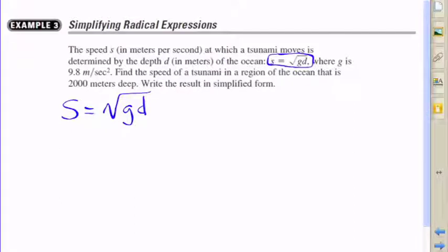So the speed at which the tsunami moves is given by s equals the square root of gd. That's why I've written this formula out for you. And not only that, but we're given some values for our variables here.